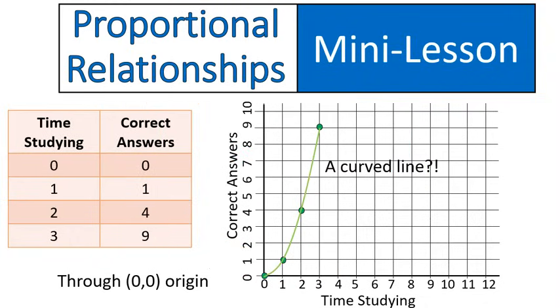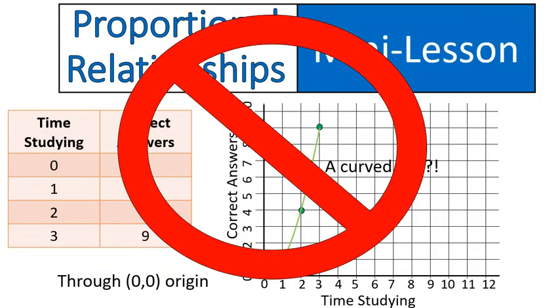Proportional relationships need to meet both criteria. It needs to go through the origin and be a straight line. So again, does not work.